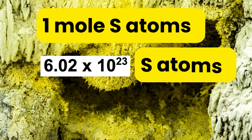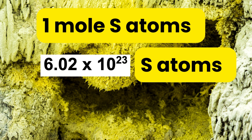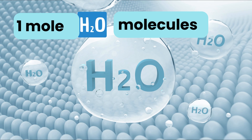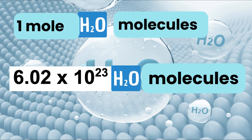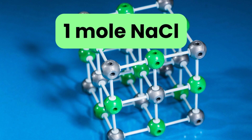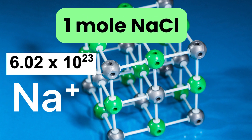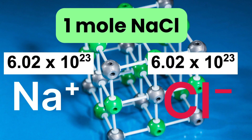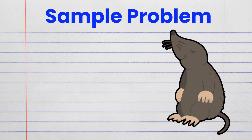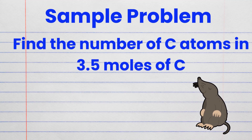Conversion from moles to number of particles: one mole of sulfur atoms equals 6.02 times 10 to the 23 sulfur atoms. One mole of water molecules is 6.02 times 10 to the 23 water molecules. One mole of NaCl equals 6.02 times 10 to the 23 sodium 1+ ions and chloride 1− ions, because it's an ionic bond. Sample problem: find the number of carbon atoms in 3.5 moles of carbon.